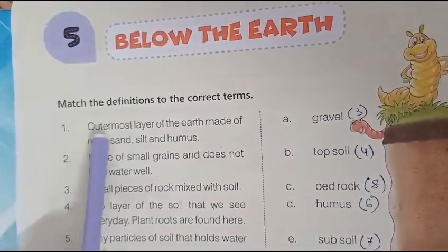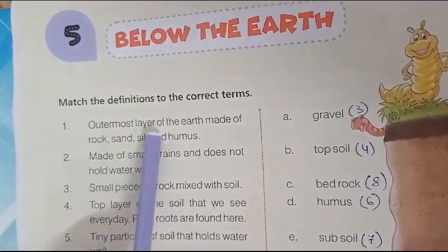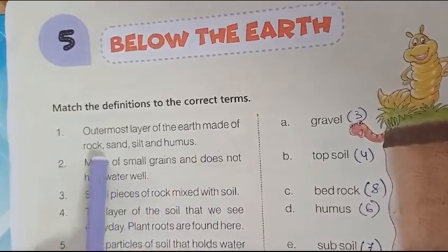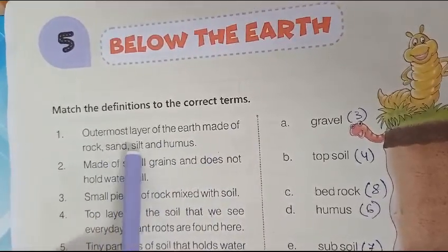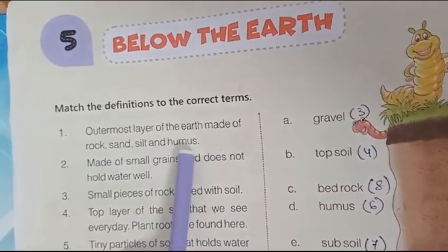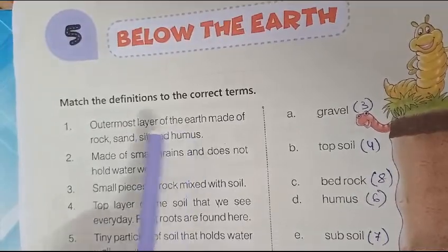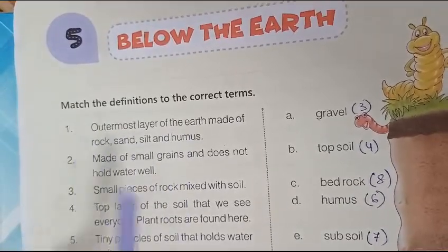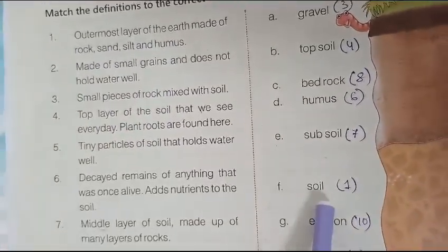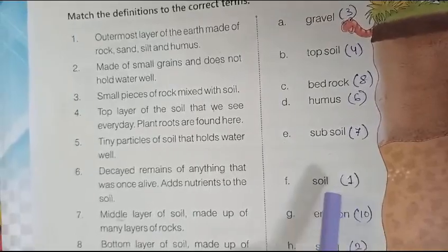Number 1: Outermost layer of the earth made of rock, sand, sleet, and humus. The answer is soil — it's called soil.